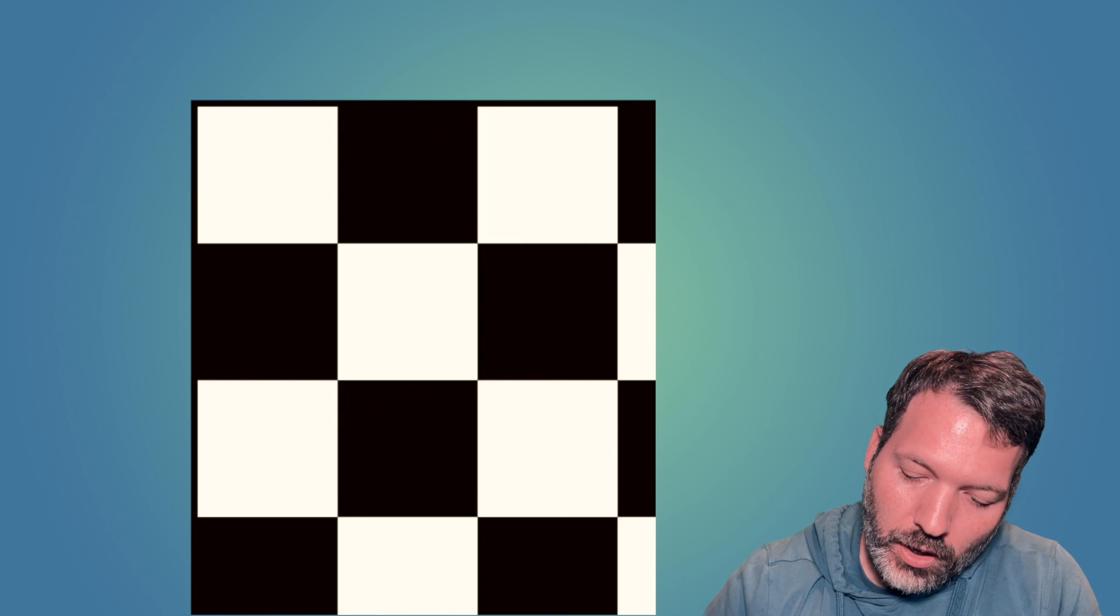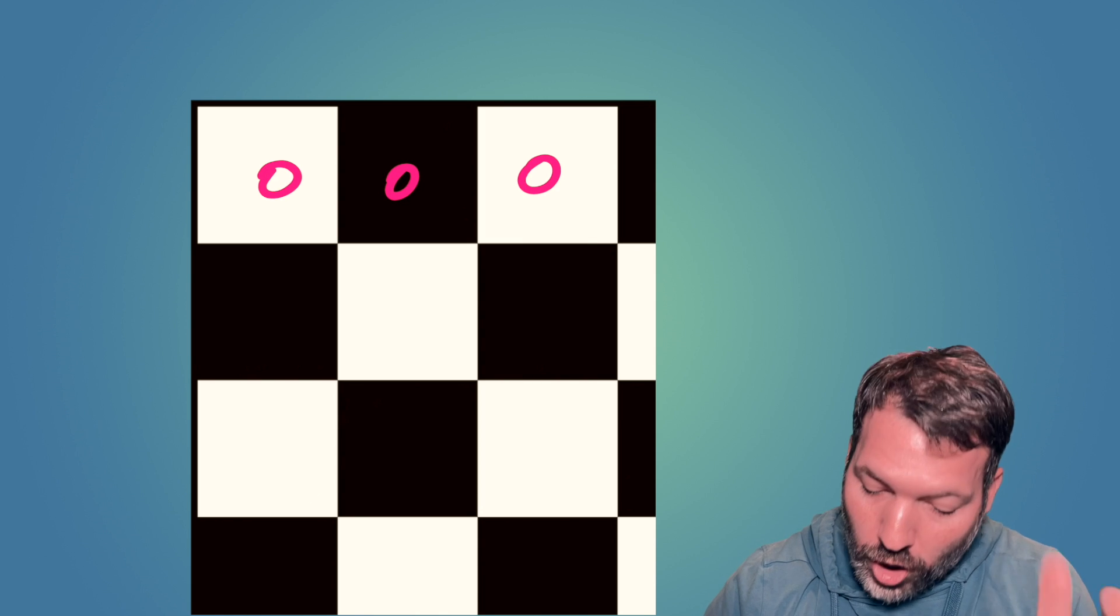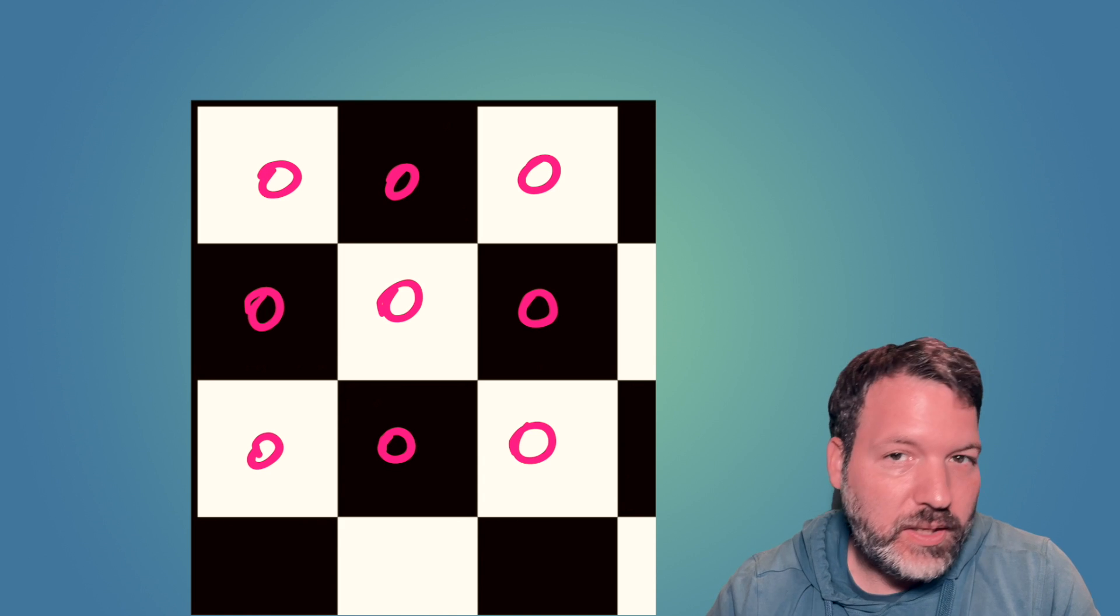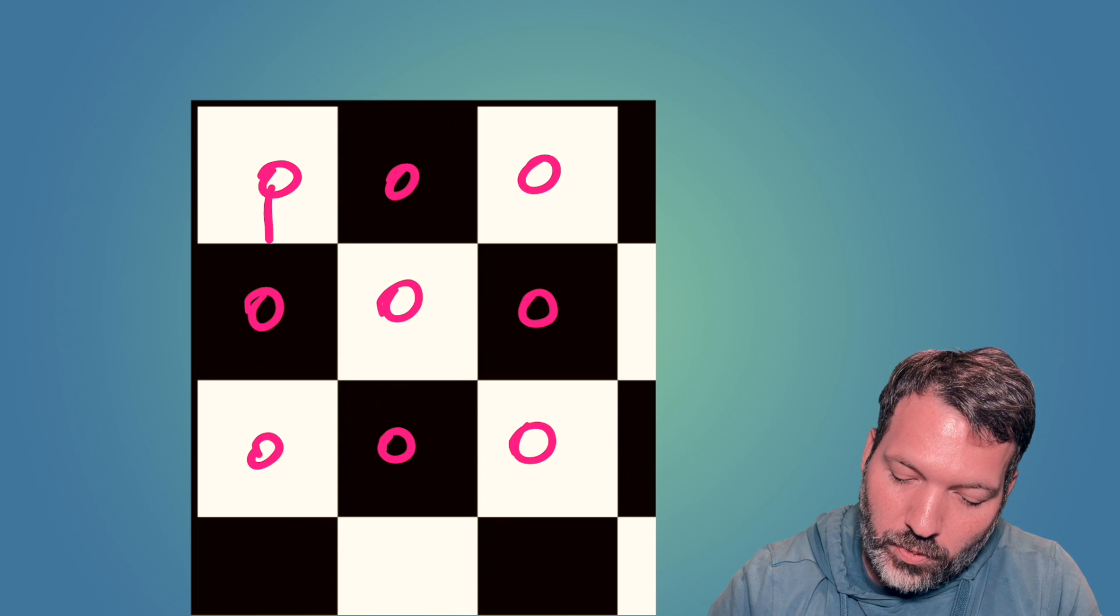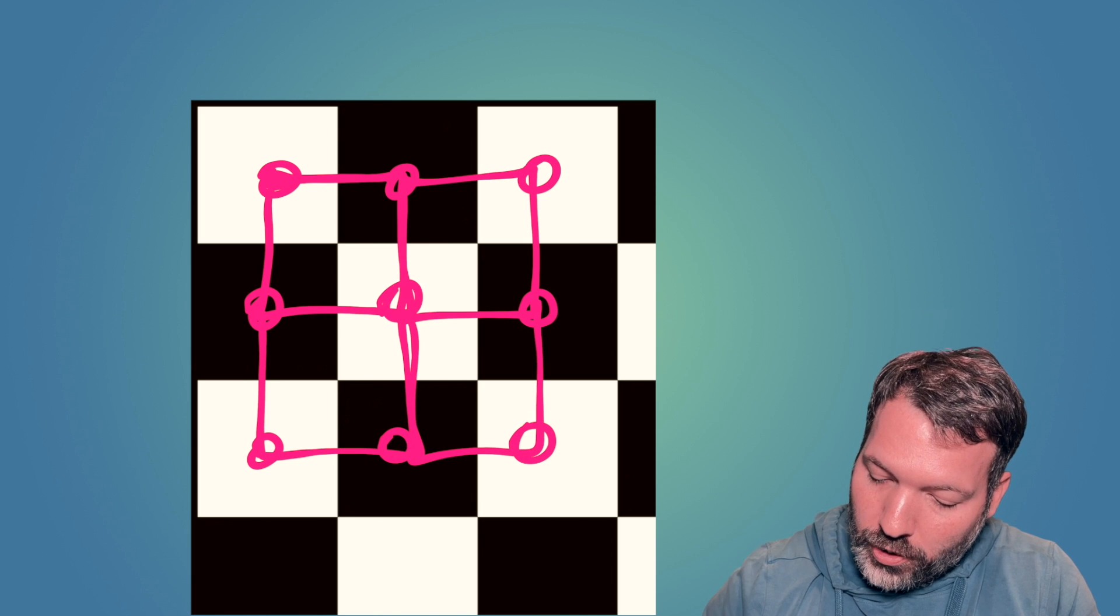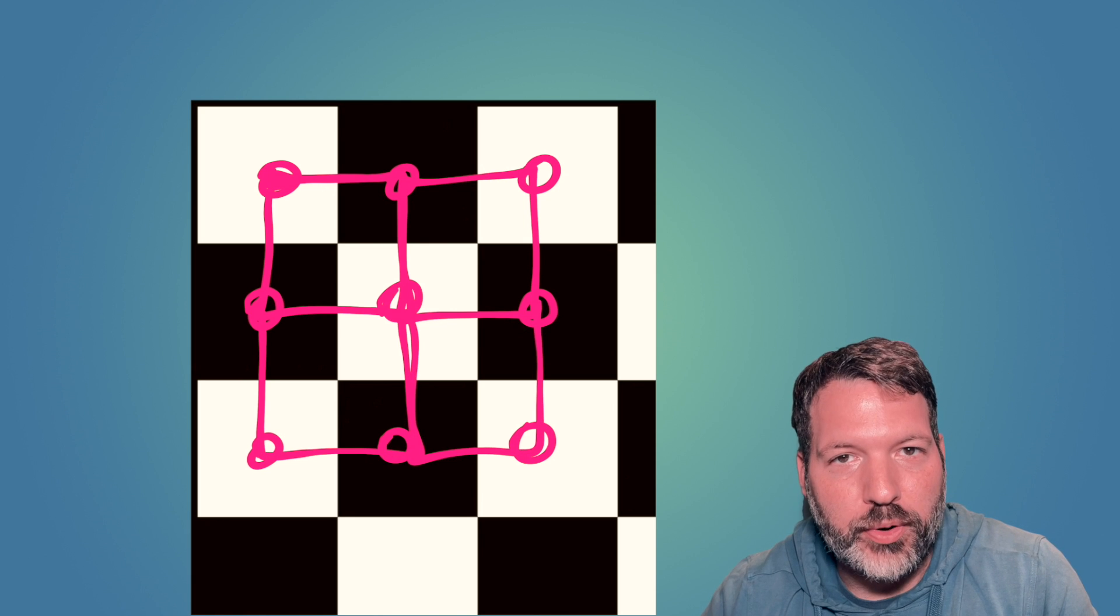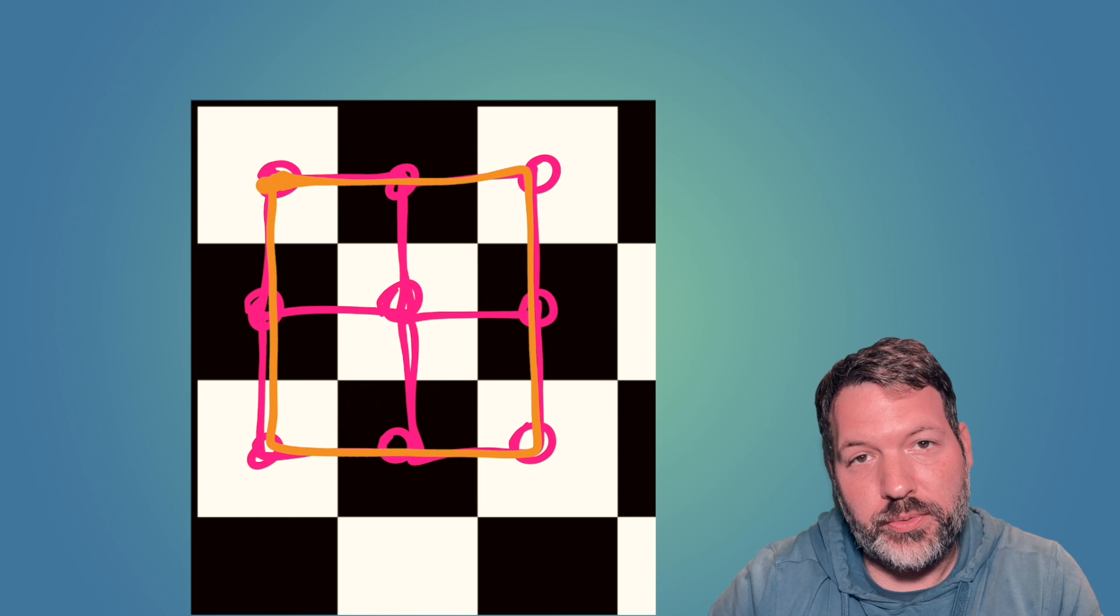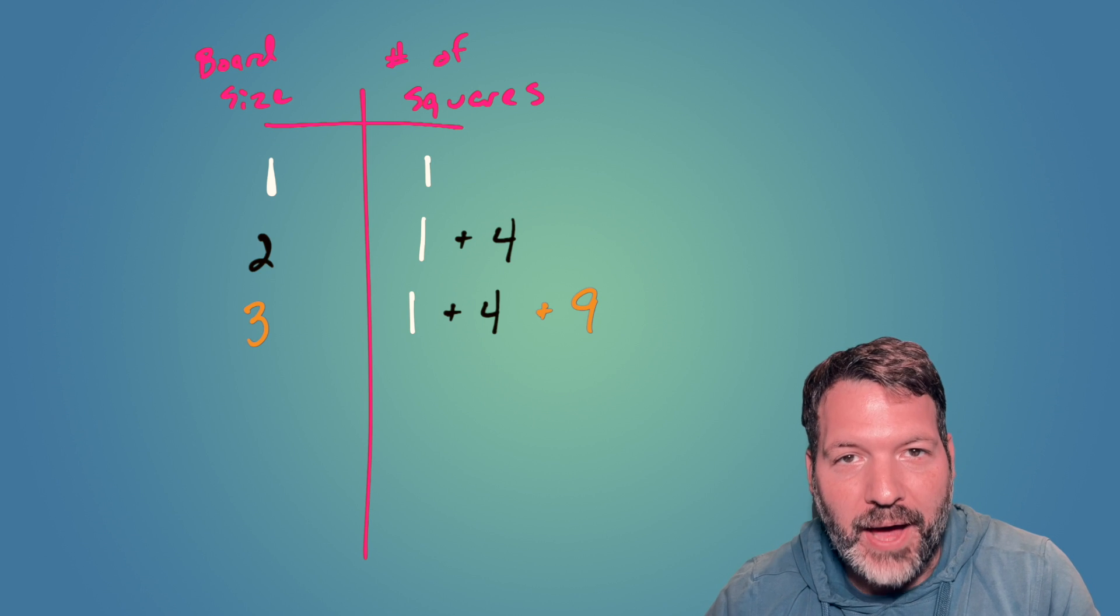Let's zoom out again to consider a larger 3x3 board. Of course, we have our classic wrong answer. 3x3 board is going to have 9 1x1 squares. But at this point, we can also say we've got 1, 2, 3, and 4 2x2 squares on that 3x3 chessboard, plus one large 3x3 square. And at this point, hopefully we have discerned the pattern.